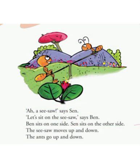Now let's read our textbook. Have a look at this picture. We see our Ben and Sen. Tell me, what do Ben and Sen see there? Yes, they see a seesaw. Now Ben and Sen are on the seesaw. Look — Ben sits on one side of the seesaw, and Sen sits on the other side. Then the seesaw moves up and down, and the ants go up and down.